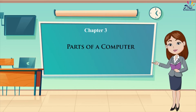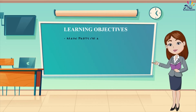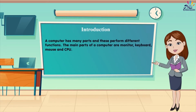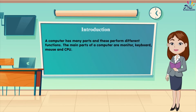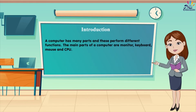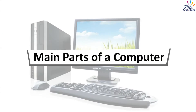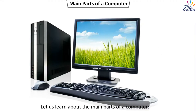Chapter 3: Parts of a Computer. Learning Objectives: Main Parts of a Computer. A computer has many parts and these perform different functions. The main parts of a computer are Monitor, Keyboard, Mouse, and CPU. Let us learn about the main parts of a computer.